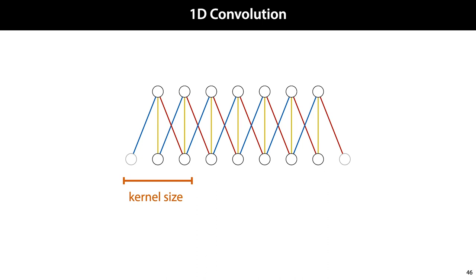Note that the number of distinct weights in this layer depends only on the size of the kernel and the number of input and output channels. If we see a longer or shorter sequence, we just repeat the same kernel more often, but we don't need any extra weights.